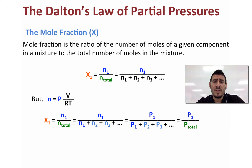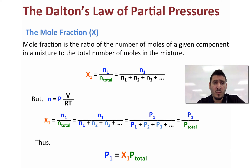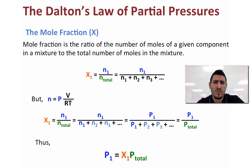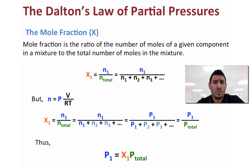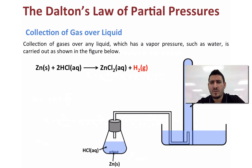Rearranging this expression, we can also find the partial pressure from the mole fraction: P1 = χ1 × P_total. This is very important when solving gas stoichiometry problems, since instead of working with number of moles we can simply work with pressure. Dalton's law is especially important when collecting a gas over a liquid.